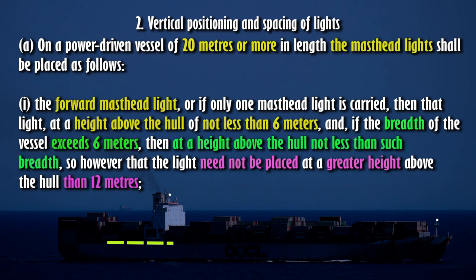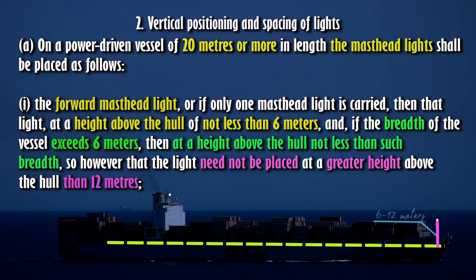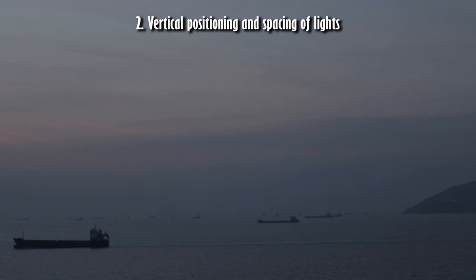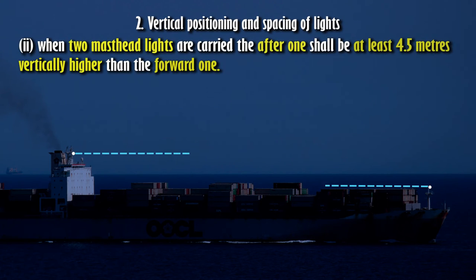Section 2 — Vertical Positioning and Spacing of Lights. (A) On a power-driven vessel of 20 meters or more in length, the masthead lights shall be placed as follows: (1) The forward masthead light, or if only one masthead light is carried, then that light, at a height above the hull of not less than 6 meters; and if the breadth of the vessel exceeds 6 meters, then at a height above the hull not less than such breadth. However, the light need not be placed at a greater height above the hull than 12 meters. (2) When two masthead lights are carried, the after one shall be at least 4.5 meters vertically higher than the forward one.